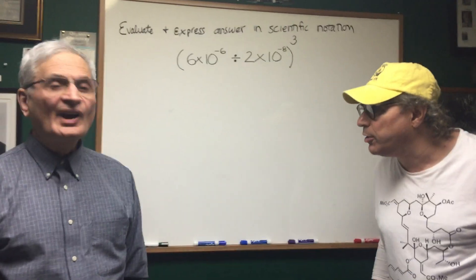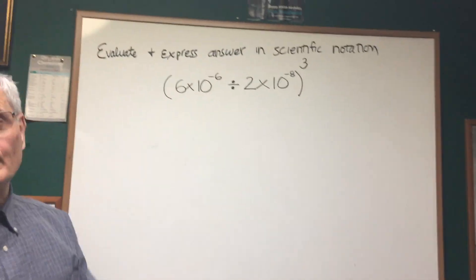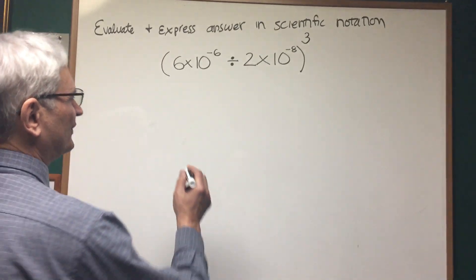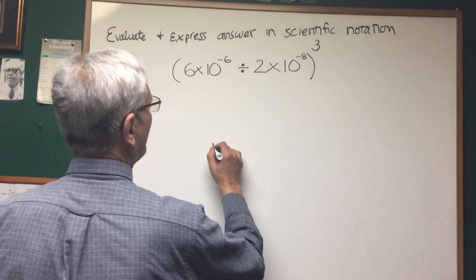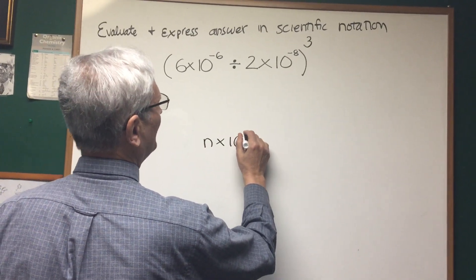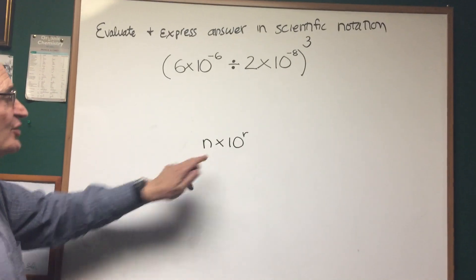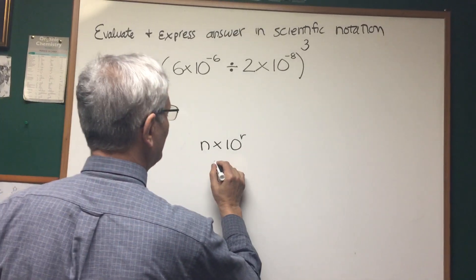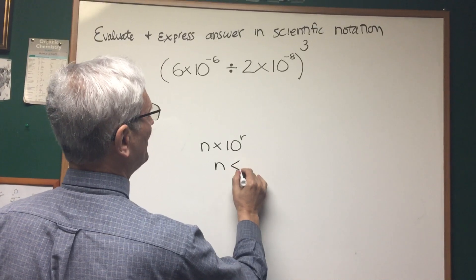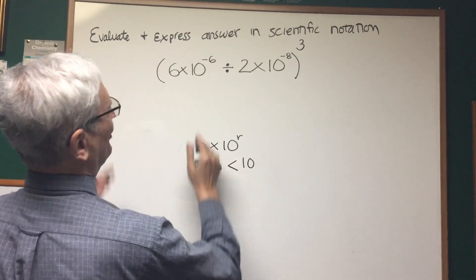Professor Blois here. This is a problem in scientific notation. Perhaps I should preface it with the standard form: n times 10 to the r, where n is strictly less than 10 and greater than or equal to 1.